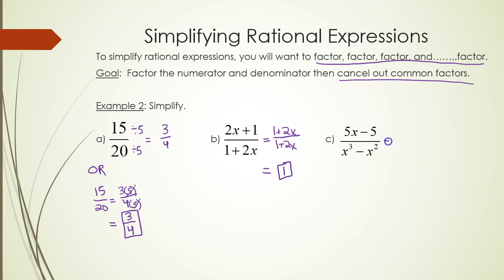Part C, we will do some factoring. I think 5x minus 5 has a GCF of 5, leaving you with x minus 1. x cubed minus x squared on the bottom, you can factor out x squared, leaving you with x minus 1.